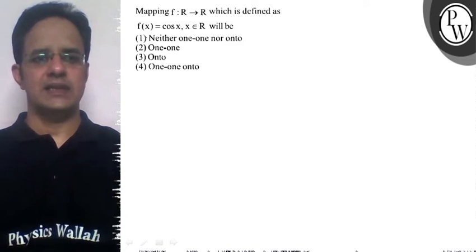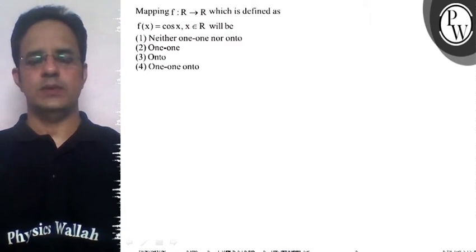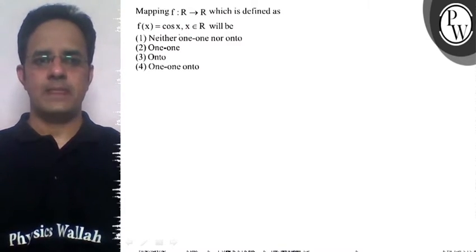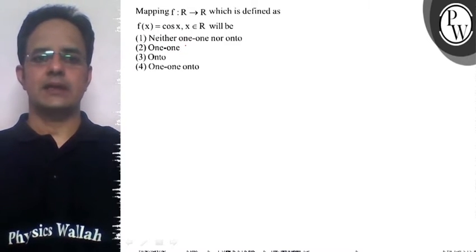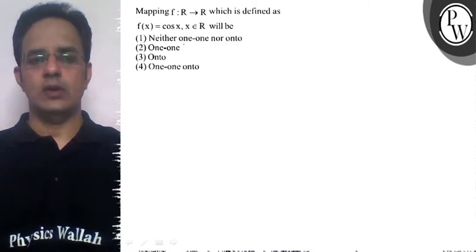Hello Bachcho, the problem asks about a mapping f from R to R which is defined as f(x) = cos x for x belonging to R. We need to determine the type of mapping, whether it is one-one, onto, into, or many-one.